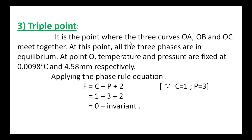The triple point is the point where the three curves OA, OB, and OC meet together. At this point, all three phases — ice, water, and water vapor — are in equilibrium. At point O, temperature and pressure are fixed at 0.0098 degrees centigrade and 4.58 mm respectively.